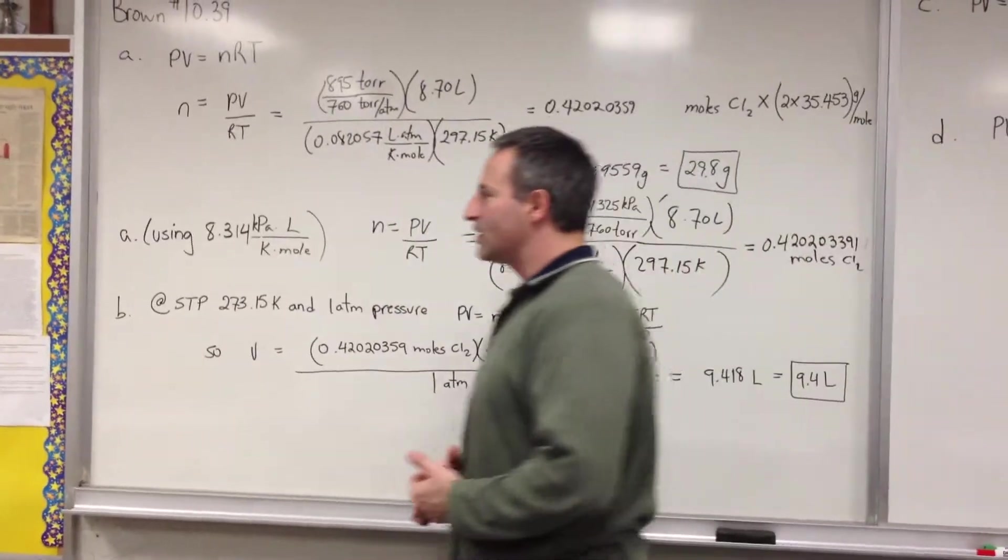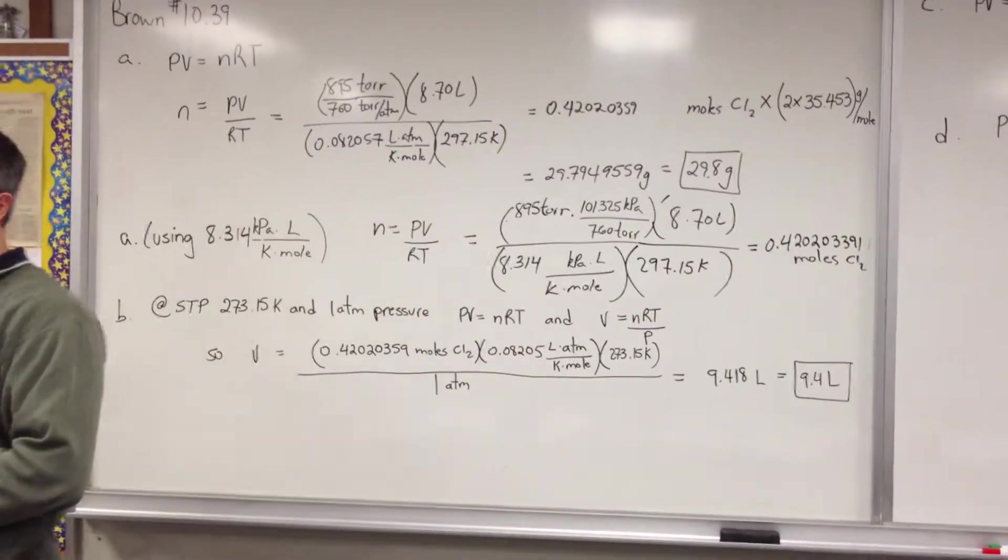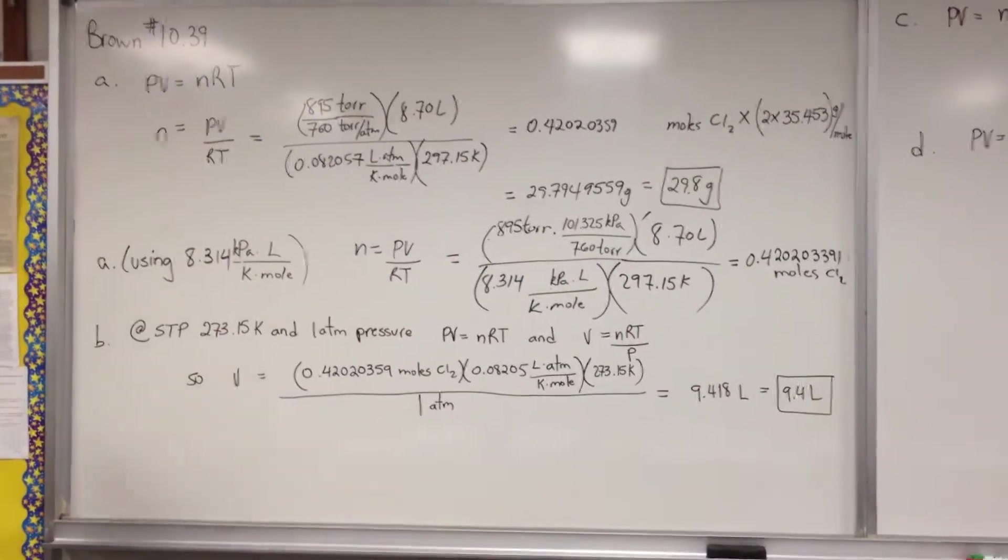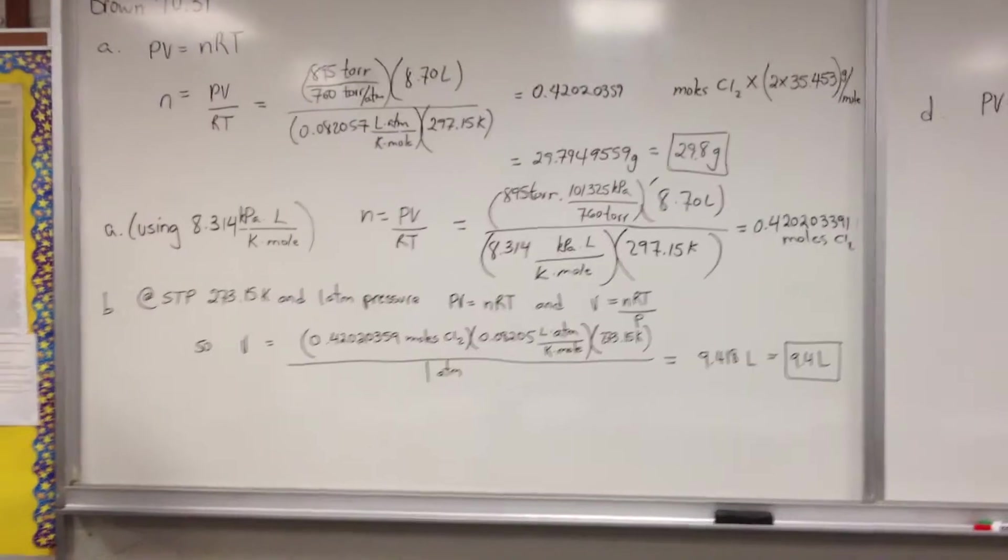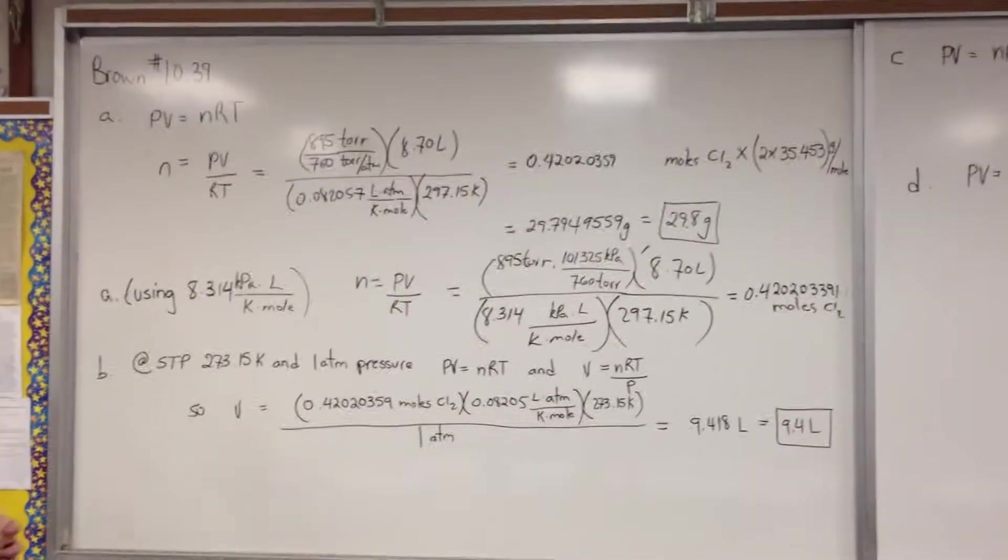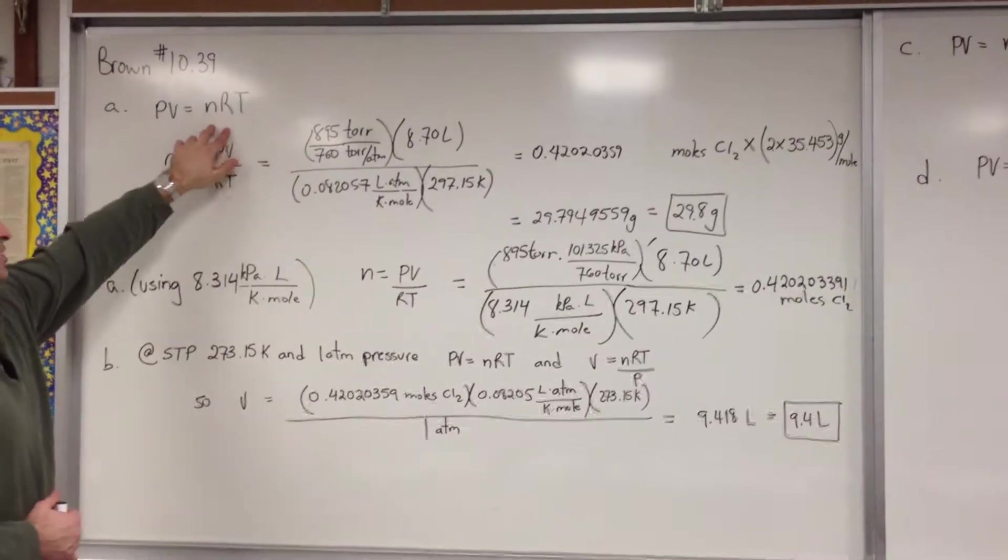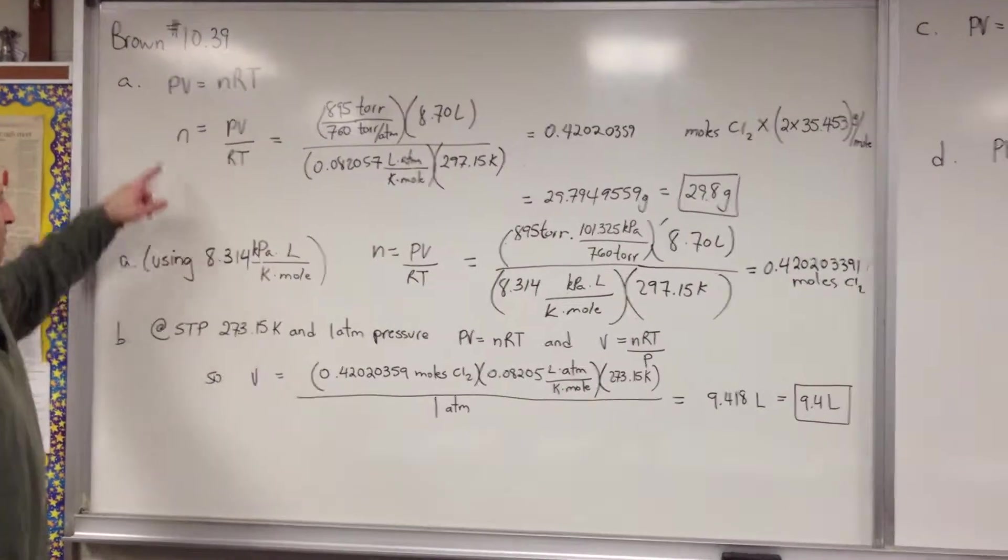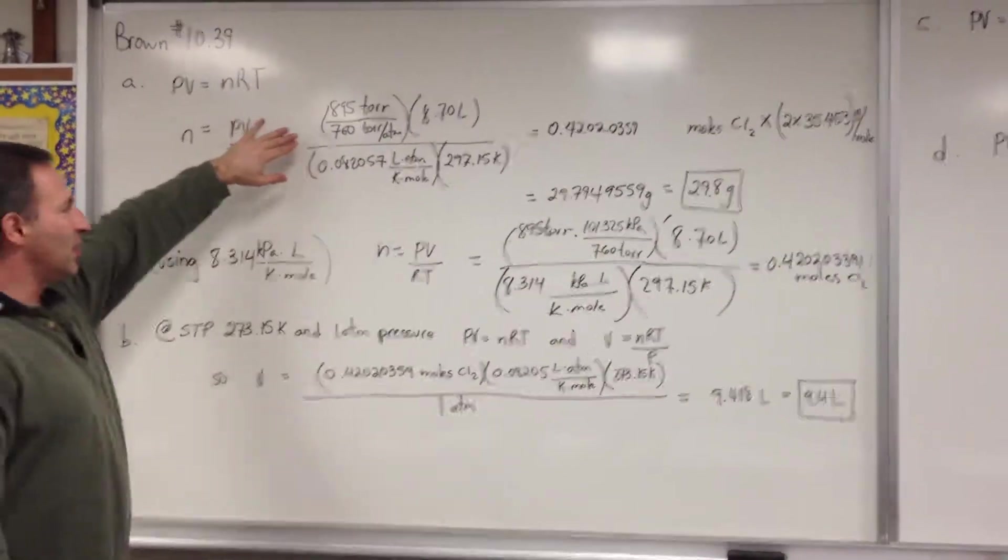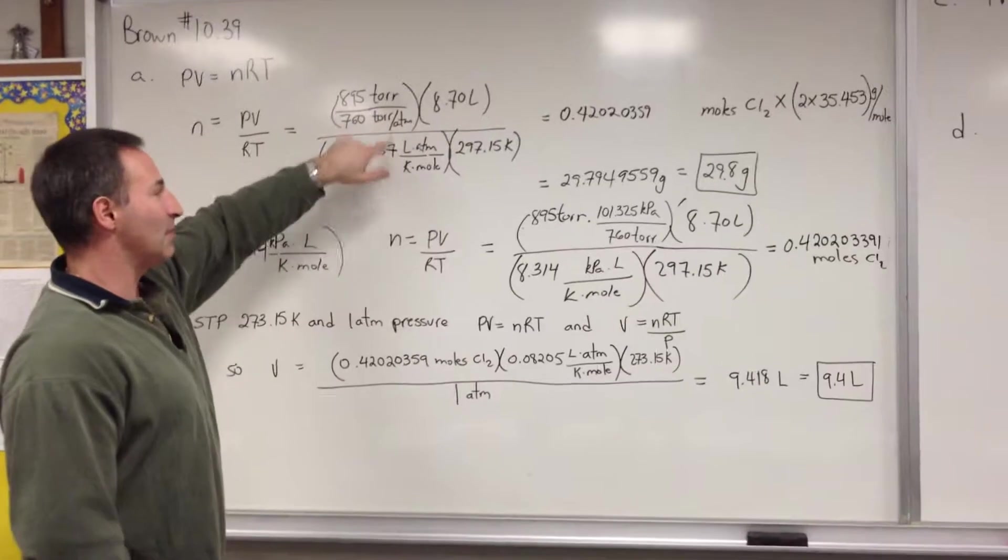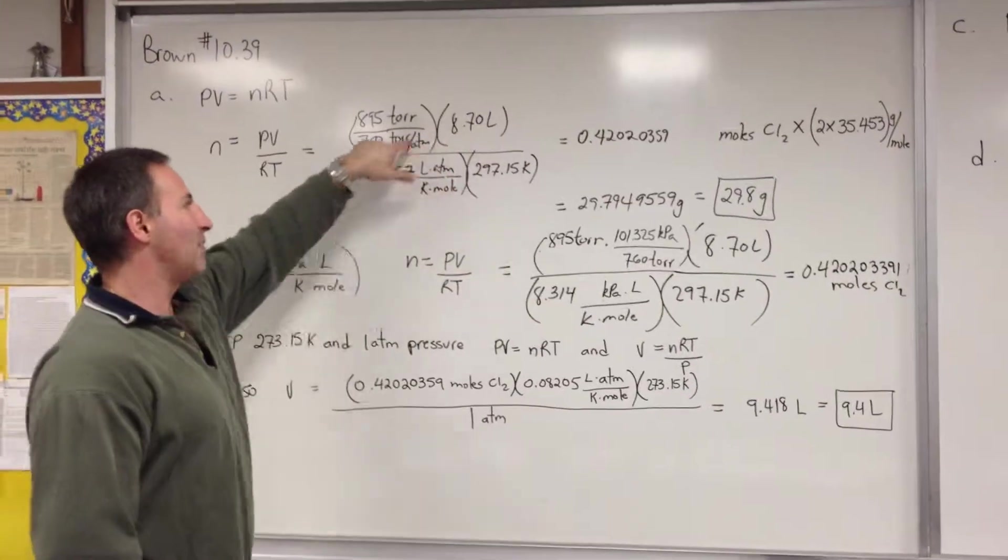So we're trying to solve for the grams of chlorine, which means we're going to find how many moles of chlorine. That's the entry point for solving the problem. We isolate the variable n by putting PV over RT. In the first section, I've solved it the way we're used to, where we have 895 over 760 to convert torr into atmospheres. We want to have liter atmospheres in the numerator.